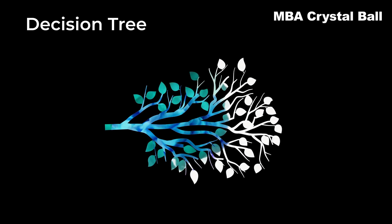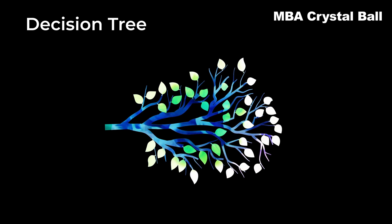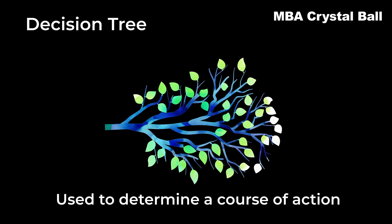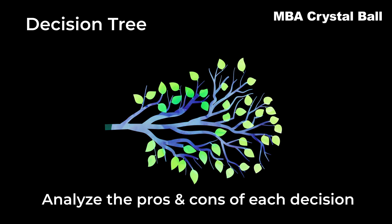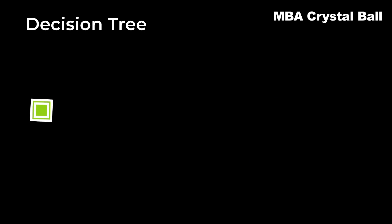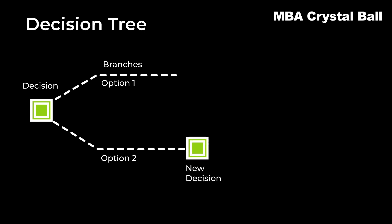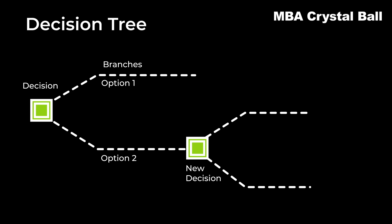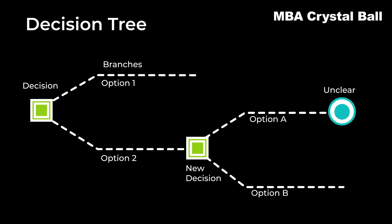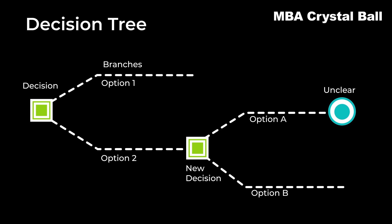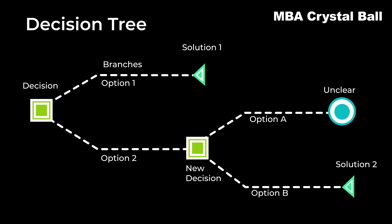A decision tree is a tree-shaped graphical representation of decisions and potential outcomes, used to determine a course of action. It helps users understand the comparative advantages and disadvantages of each decision. A decision tree is often drawn from left to right, starting with a specific decision denoted by a small square. Branches are drawn to the right representing each potential option. If the option is a new decision, a square is drawn with new branches. At the end of each branch, a circle is drawn if the result is unclear, and a triangle signifies the end of a branch or a path to a potential solution.